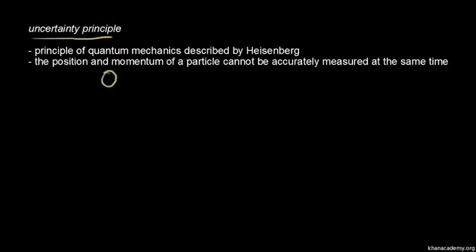The Heisenberg uncertainty principle is a principle of quantum mechanics. If we take a particle of mass m moving with velocity v, the momentum of that particle — the linear momentum — is equal to the mass times the velocity. According to the uncertainty principle, you can't know the position and the momentum of that particle accurately at the same time. So if you know where that particle is in space really well, you don't know the momentum or velocity of that particle, and vice versa.